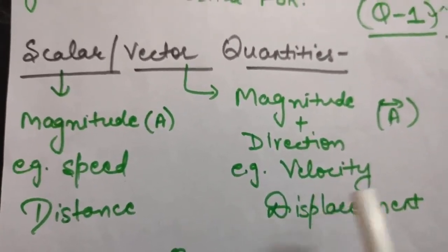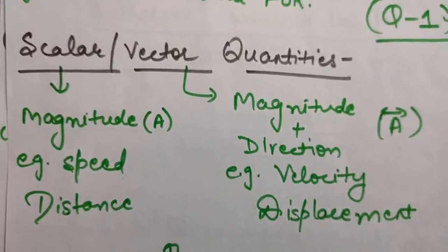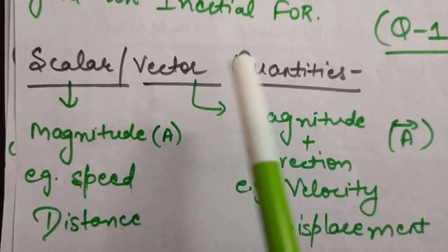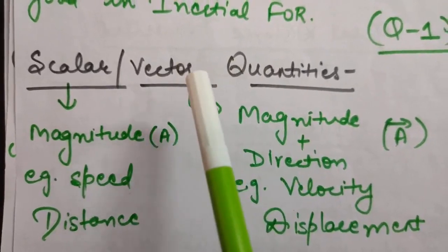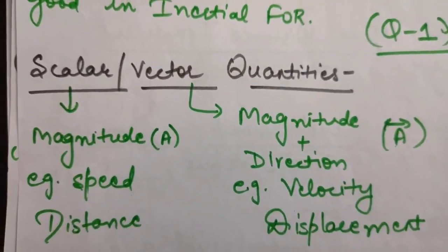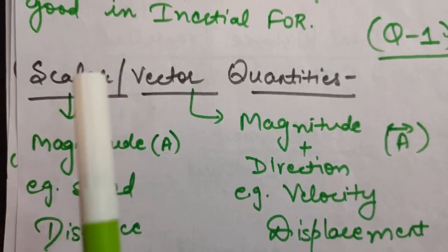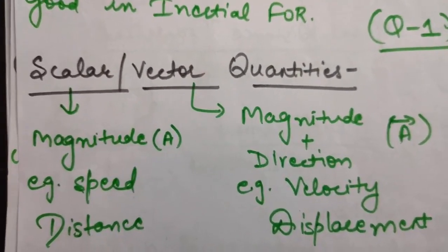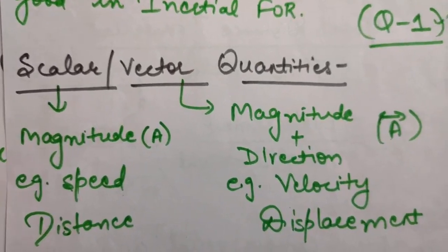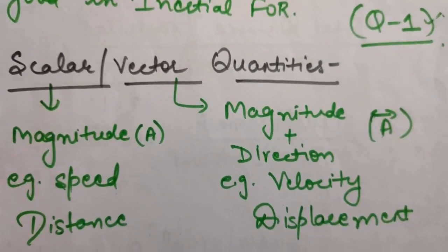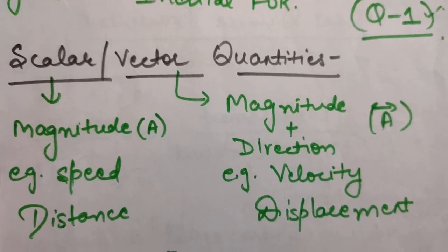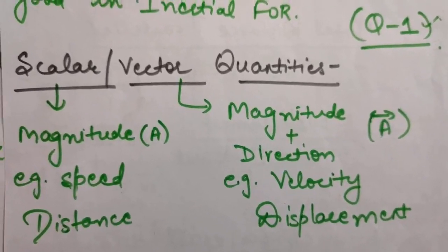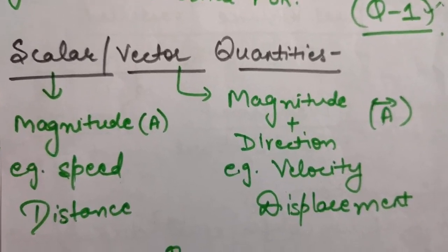Scalar quantities and vector quantities have one more difference - vectors always follow the vector laws of addition, but scalar quantities do not. I will be explaining vector laws of addition in the next chapter. For now, just remember that vectors follow vector laws of addition but scalars do not.